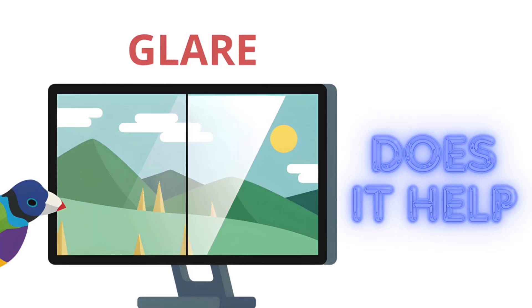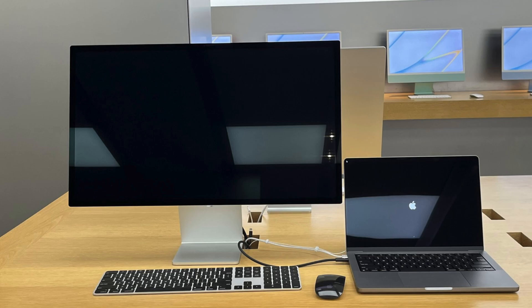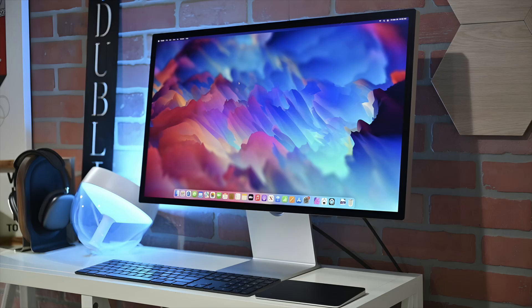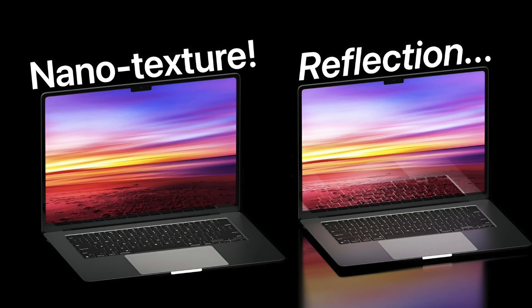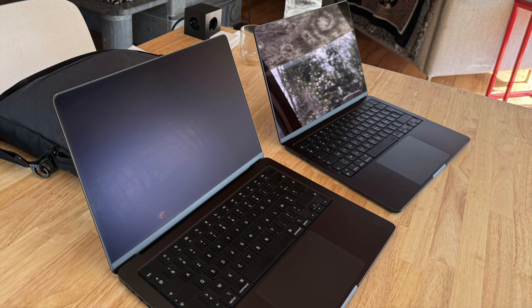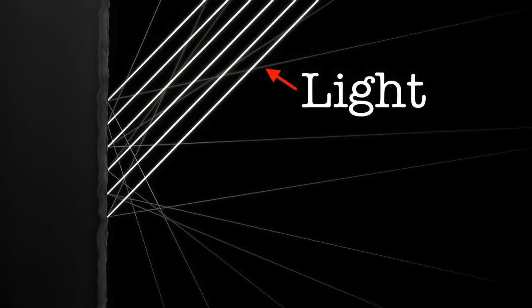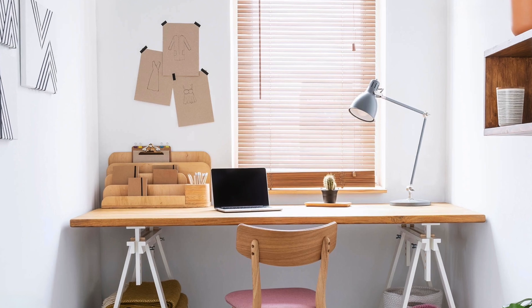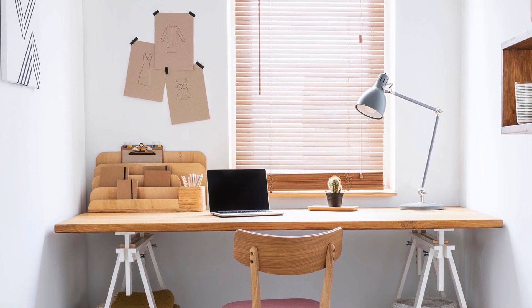First, how do nanotexture and standard glass compare in terms of reflections and glare? Standard glass is like a traditional glossy screen — it delivers sharp, vibrant visuals but can reflect a lot of light, especially in bright environments or near windows. Nanotexture was designed to fix this issue. Its surface is laser etched to diffuse light, significantly reducing glare and reflections, making it a great option for bright workspaces where glossy screens can be distracting.